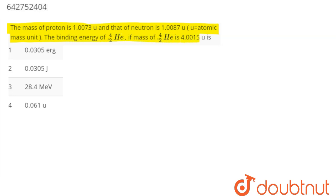helium-42 is 4.0015 u. So here we can say that there is helium-42. Now in this there are